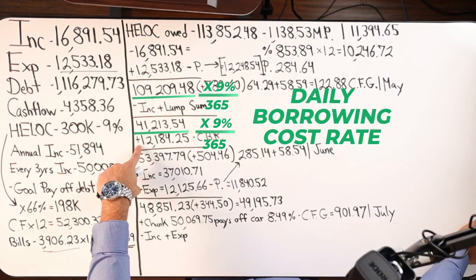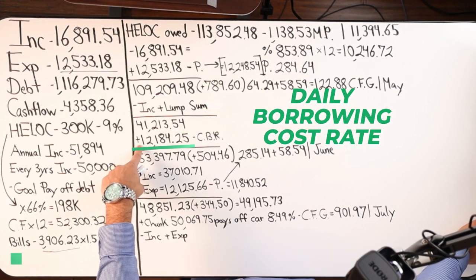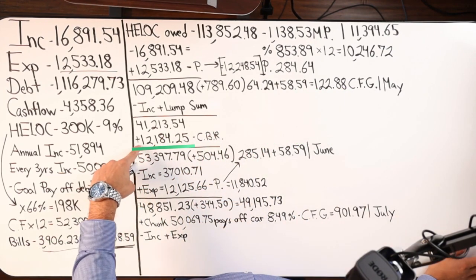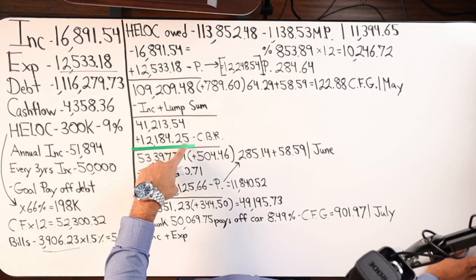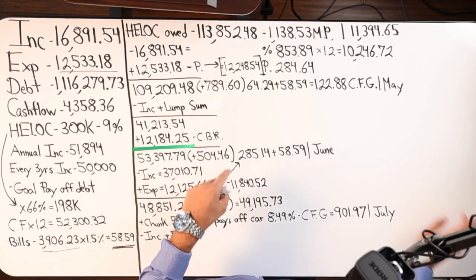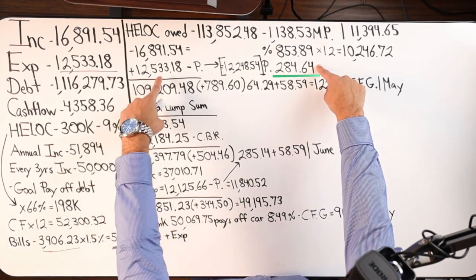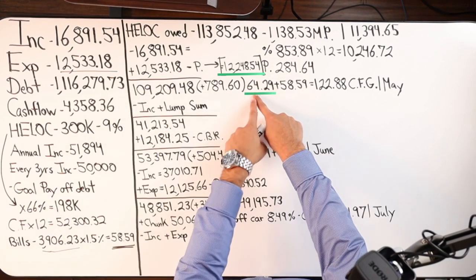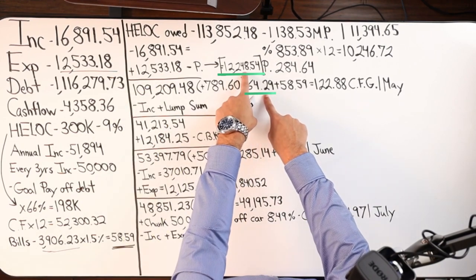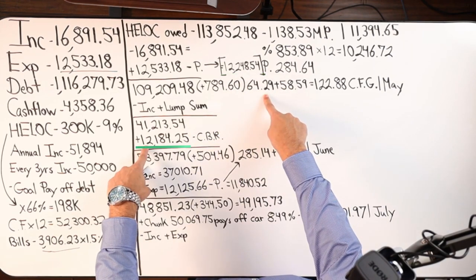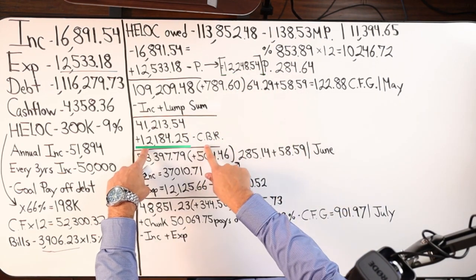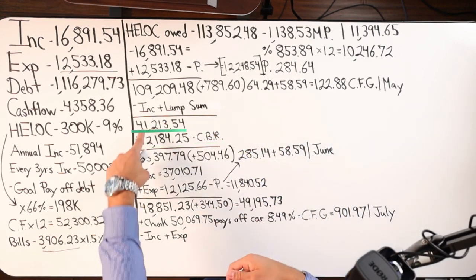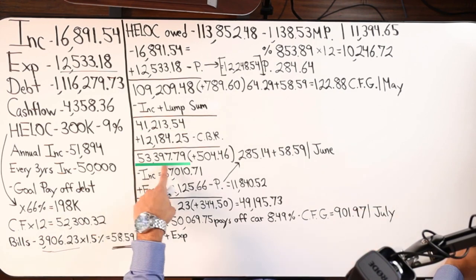Now here's how I wrote the expense number to accommodate. I'm saying 12,184.25 minus cashback rewards. So what I did was I minused 284.64 from this number. Then I minused $64.29 from that number, 12,248.54. Then I'm saying minus again, 58.59. Once you get that number, add that to the 41, you should be here, 53,397.79.